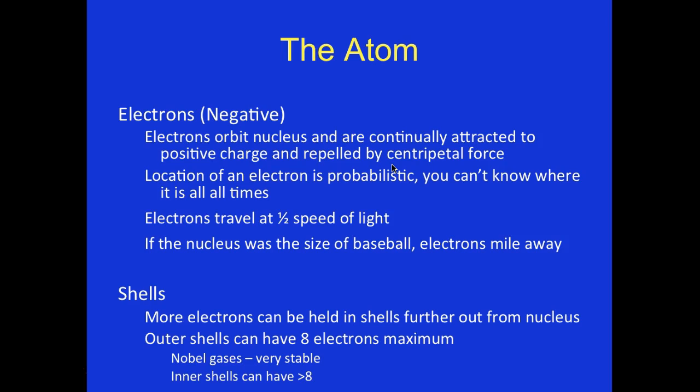Electrons orbit the nucleus and are continually attracted by the positive force and repelled by centrifugal force — pulled in and out as they orbit. The location of the electron is probabilistic. The electron travels at half the speed of light. If the nucleus were the size of a baseball, electrons would be a mile away — that gives some perspective.